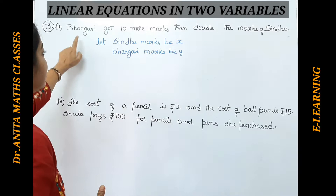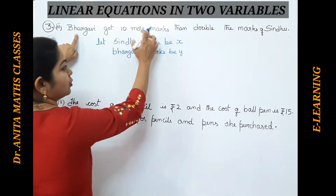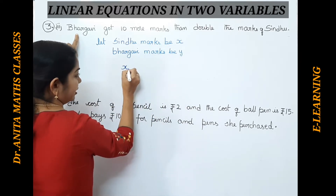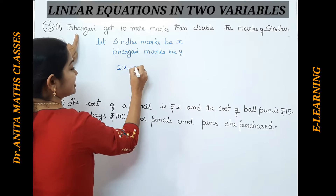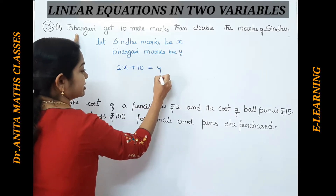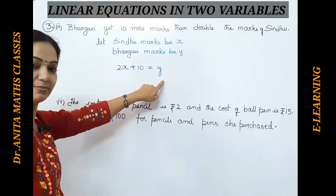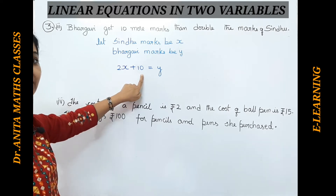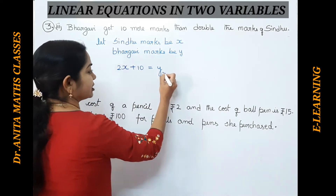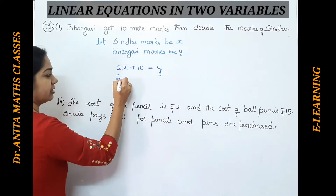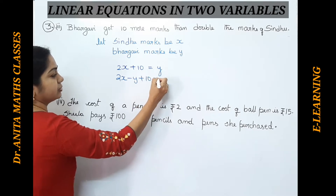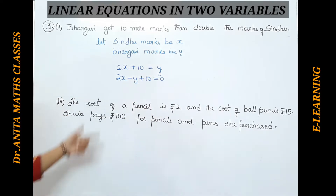Bhargavi got 10 marks more than double the marks of Sindhu. Sindhu's marks are X, so double the marks of Sindhu plus 10 more equals Bhargavi's marks, which is Y. So Y = 2X + 10. This is the final expression. You can also bring it into general form: 2X − Y + 10 = 0.